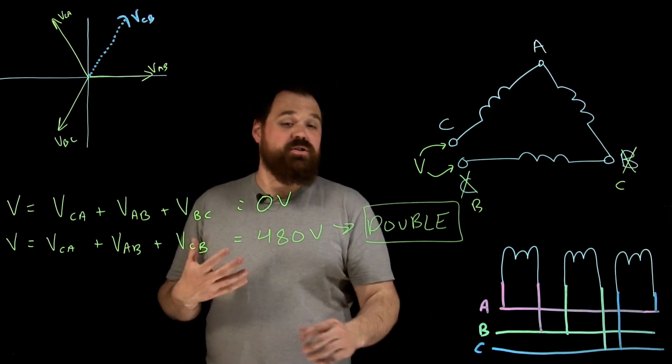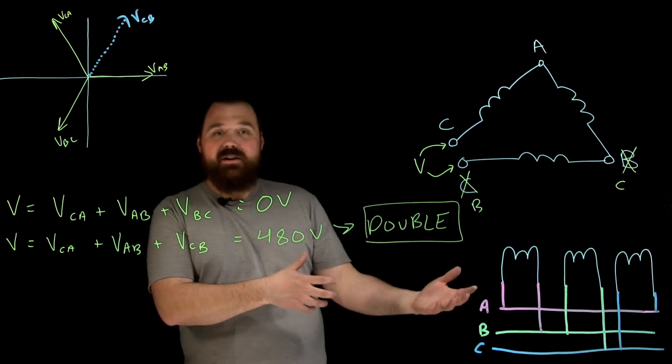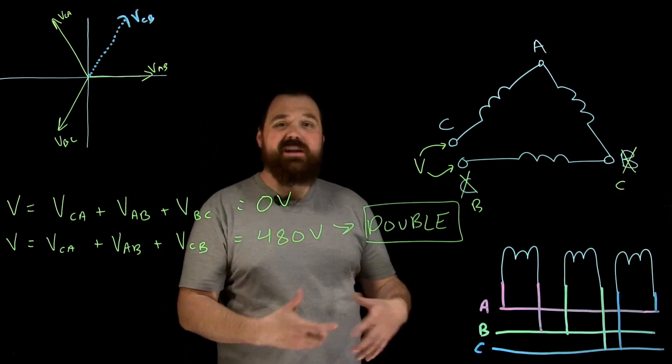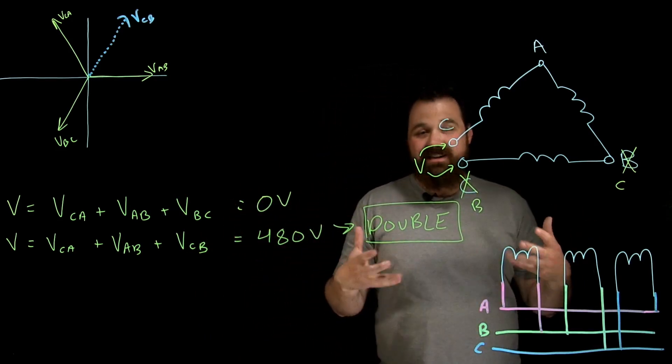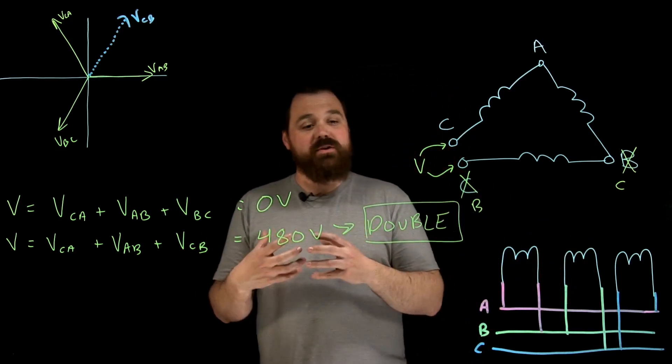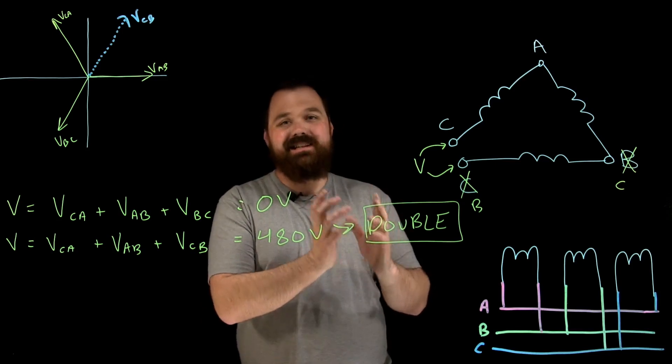So that's just a test that you would do when I'm gonna energize the secondary of that transformer. I double check. If it's a proper connection, I see that zero volts. If it's an incorrect connection, whatever my source voltage is or my rated voltages, I'm gonna see double that.